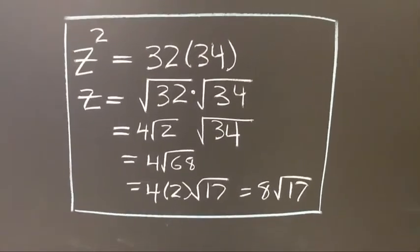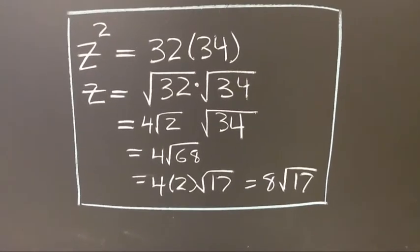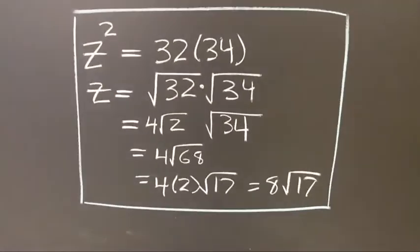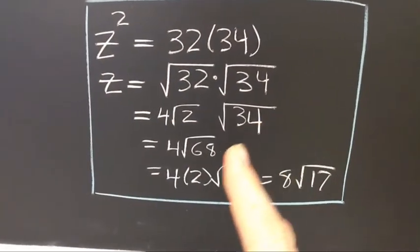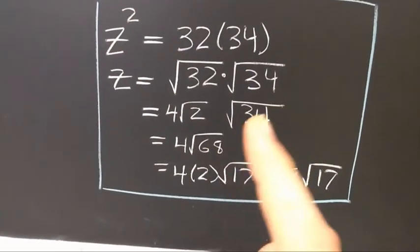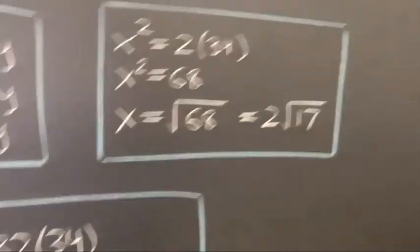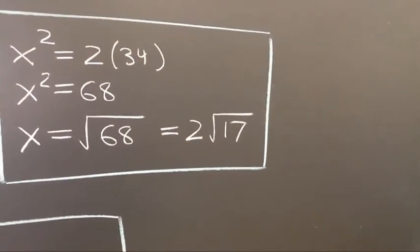34 breaks down into 2 times 17, but that's as far as it goes. So I multiply the 2 and the 34, and I get 68. But we just did the square root of 68. It was 2 square roots of 17.